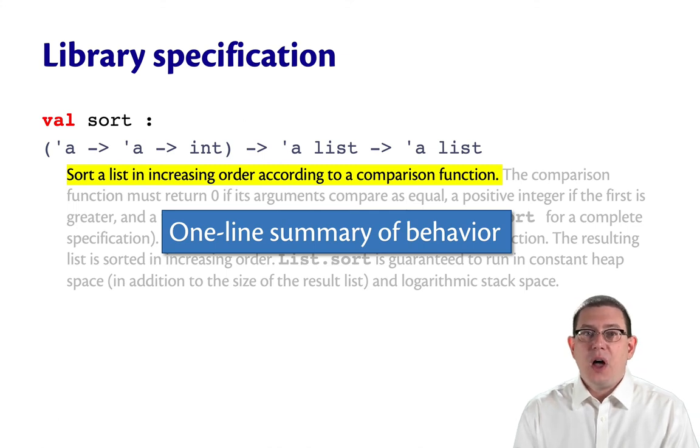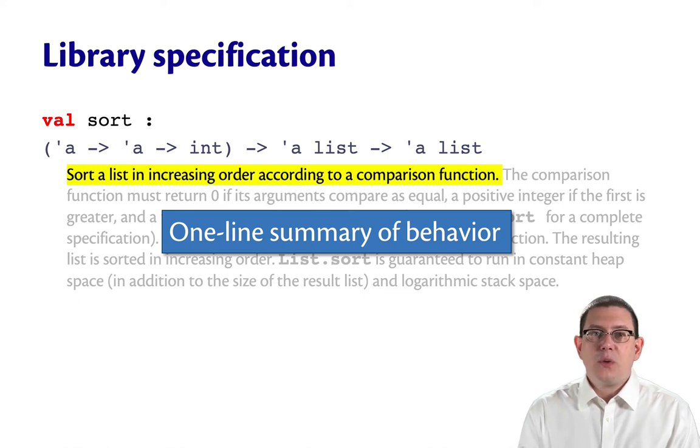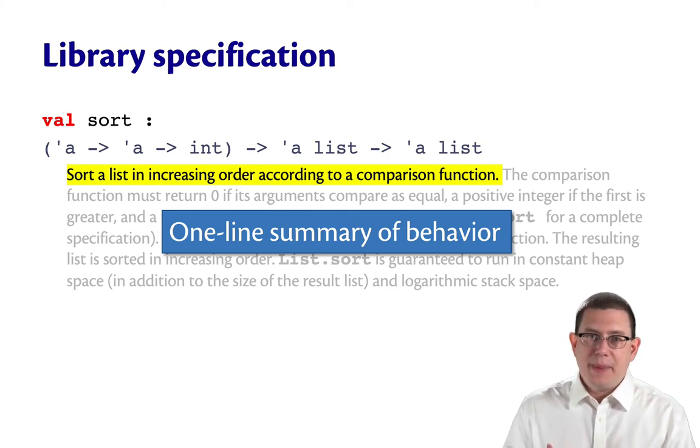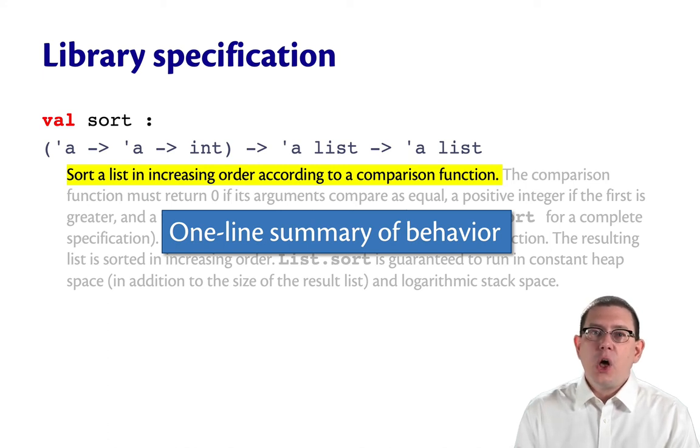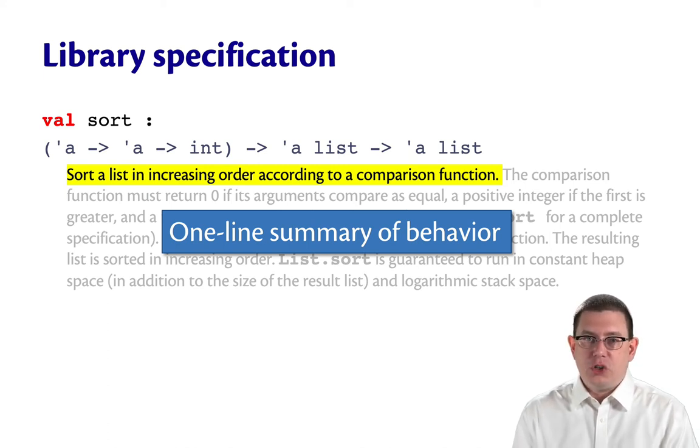The first line is a one-line summary of the behavior. Now, in this case, it's not written exactly as f of x is something about x. Instead, it's a little bit higher level than that, which sometimes is necessary. For a sorting function, we all generally understand what the idea of a sort is. So writing down in mathematical detail is not the most helpful way we could begin the specification of this function.